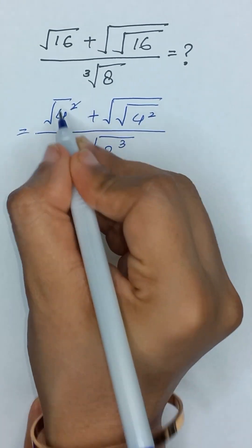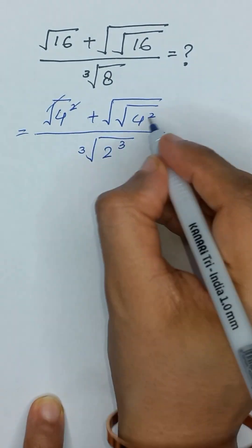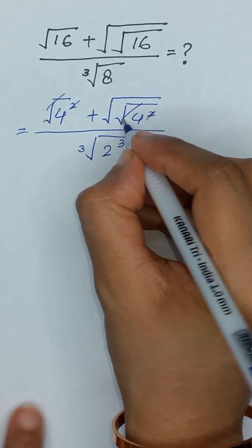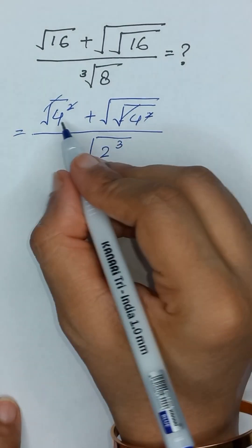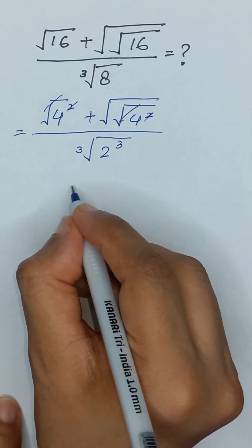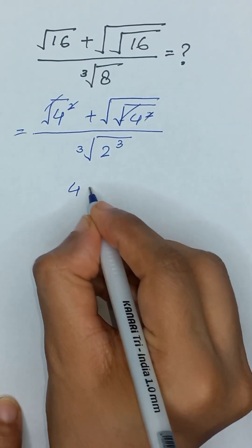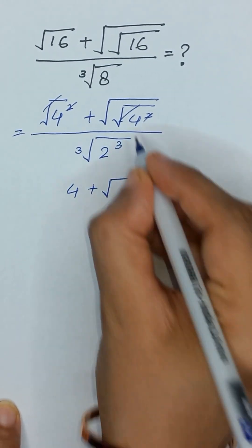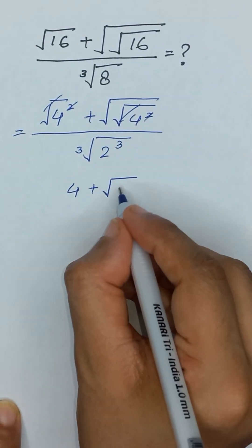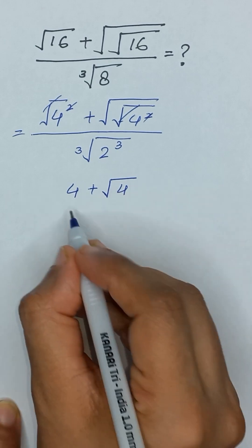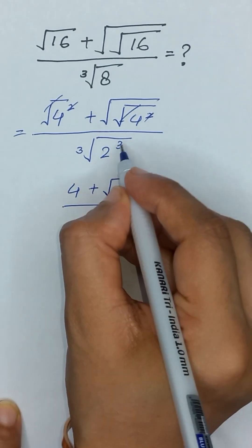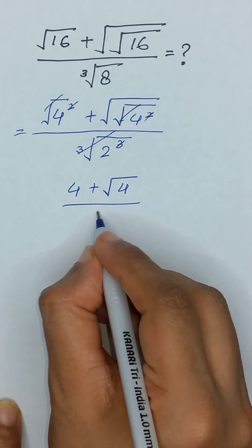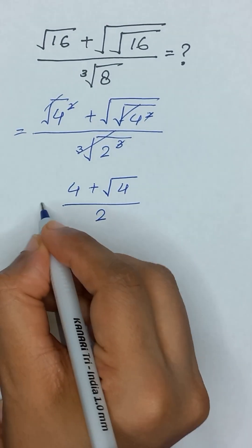Now this square and square root will be cancelled out, this square and square root will be cancelled out, and it will become 4 plus square root of 4, divided by 2 — since the cube and cube root will be cancelled out.